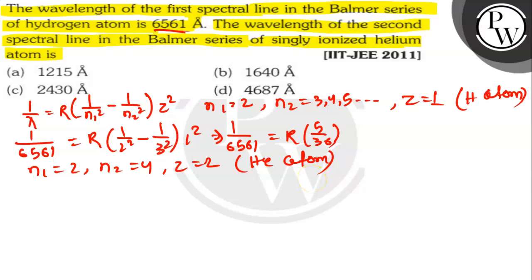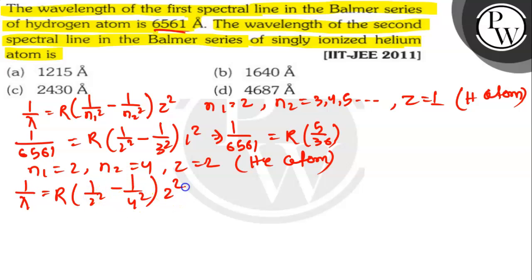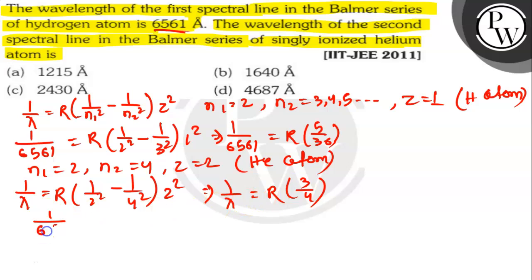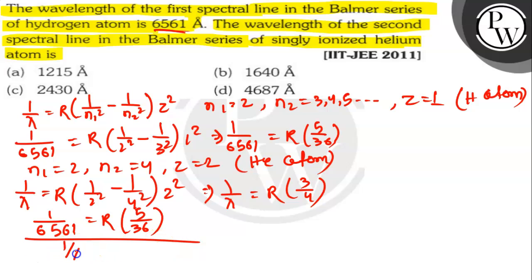Putting all these values in the equation: 1 by lambda is equal to R into 1 by 2 squared minus 1 by 4 squared, into 2 squared. So 1 by lambda is equal to R into 3 by 4. Now, by dividing both equations, we get: 1 by 6561 equals R into 5 by 36, whole divided by 1 by lambda equals R into 3 by 4.